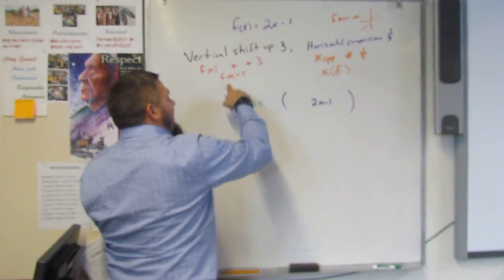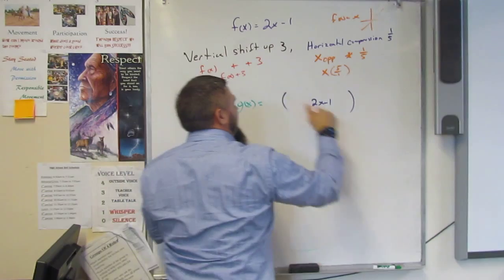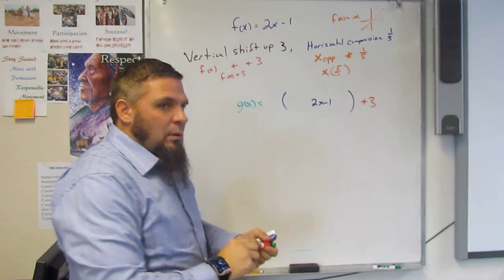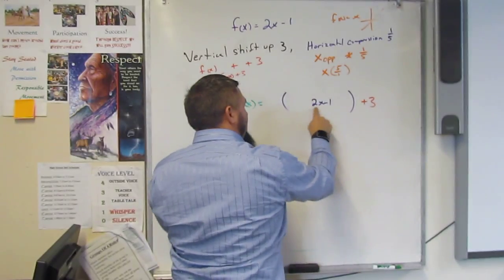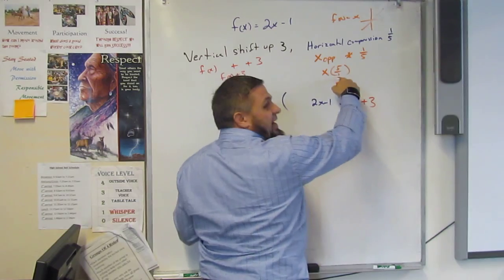So f of x, that means all of this is plus three. X, that means just this guy, is times five.